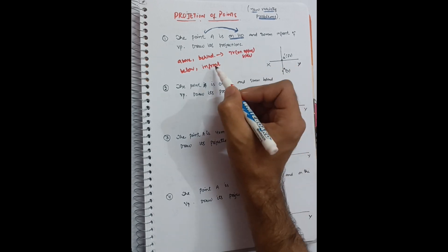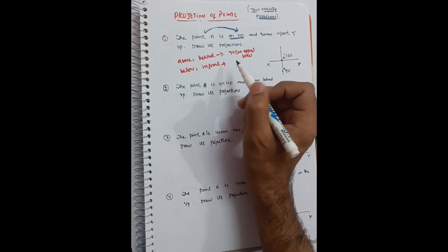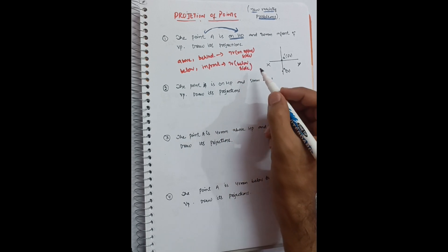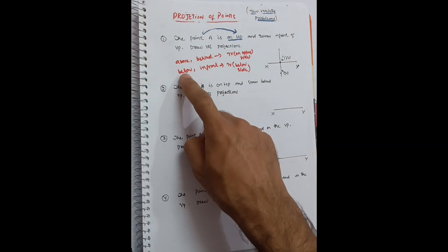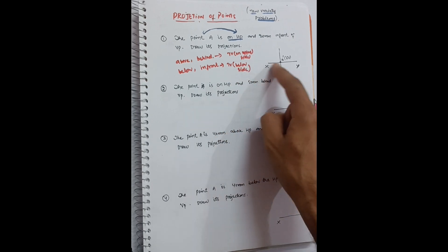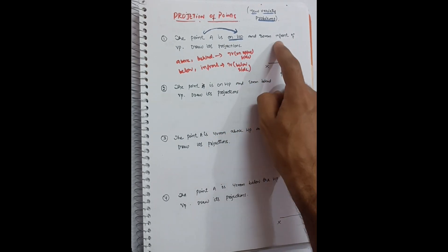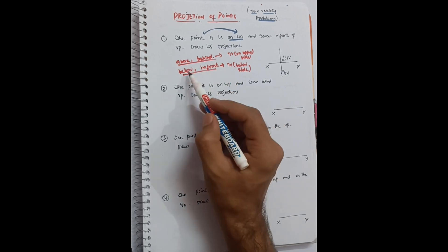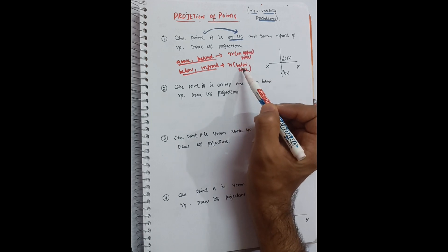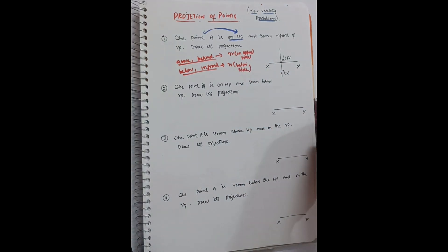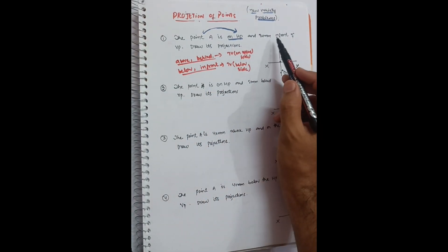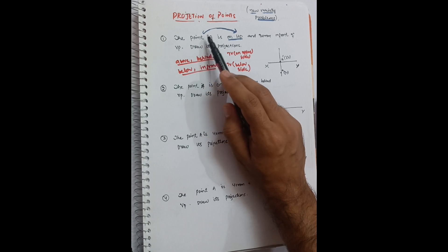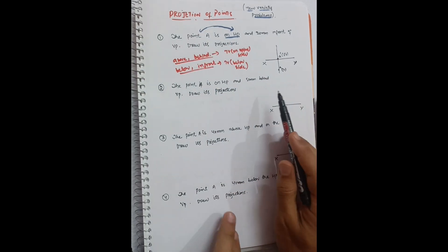Whenever 'below' and 'in front' appear, draw the top view on the below side of the reference line. Since the problem says 30 mm in front of VP, the top view goes below the reference line at 30 mm — label it A. Also remember: if the relationship is with VP, it is definitely your top view; if the relationship is with HP, it is definitely your front view. That completes this problem.